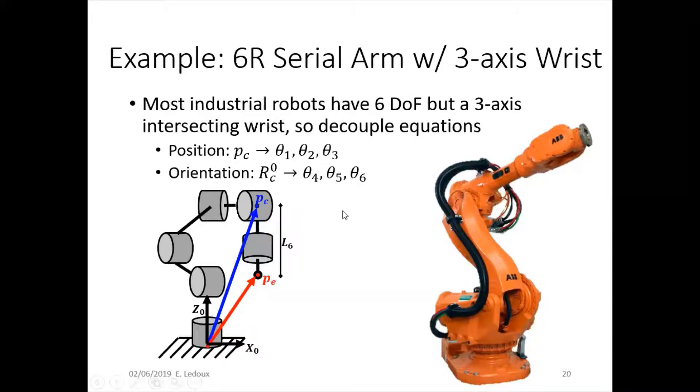So position, you can see here, the position vector goes from the origin of the base frame to the center of the wrist. That's PC. And then we can find PE, which is the tip of the end effector relative to the base. So we'll use the position of the wrist center to get theta 1, 2, and 3, and then the orientation to get theta 4, 5, and 6.